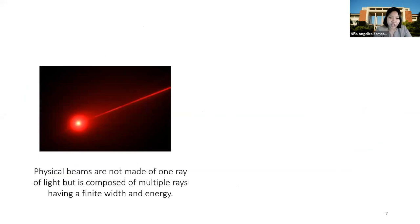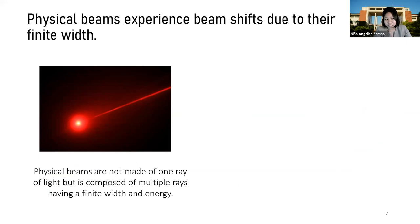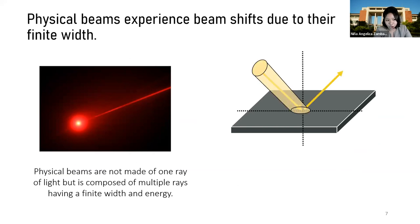However, in reality, physical beams are not made of one ray of light, but is composed of multiple rays having a finite width and energy. Due to this, real beams experience what we call beam shifts. It happens when, instead of light going out from the same point like your law of reflection, the reflected light becomes displaced or shifted from the expected point of reflection.